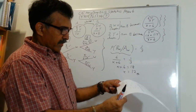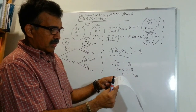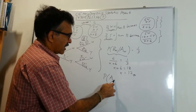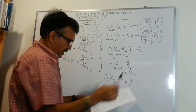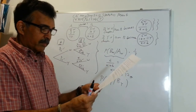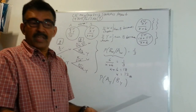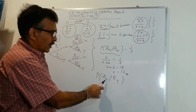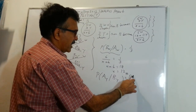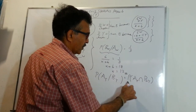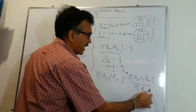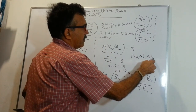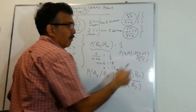In the next part of the problem, given that the ball chosen from box B is yellow, we are asked to find the conditional probability that the ball chosen from box A was yellow. So we need to find the probability of a yellow from A, given we have a yellow from B. Using the formula from our statistics class: the probability of X given Y equals the probability of X and Y over the probability of Y.